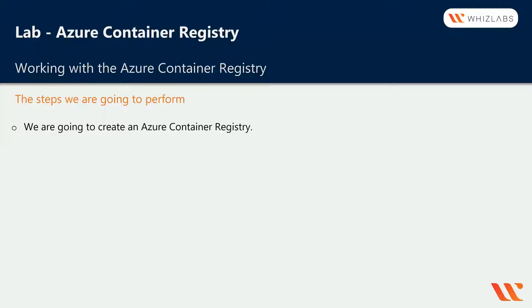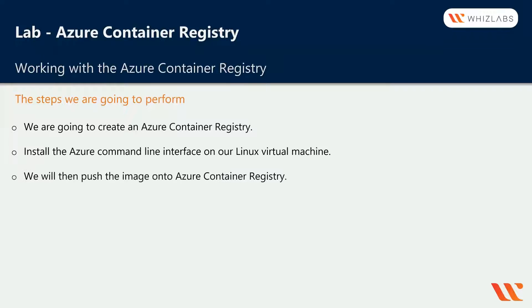Now, what are the steps we're going to perform in our lab? First, we're going to create an instance of Azure Container Registry. We'll then install the Azure Command Line Interface on our Linux virtual machine. Remember, in the prior chapter we had containerized our own Docker image — a .NET Core application running as a Docker container — and now we're going to push that image onto the Azure Container Registry.